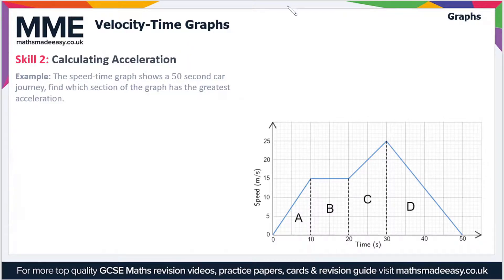The acceleration is found by working out the change in velocity divided by the time. In this graph, that is given by the gradient. So we have to work out which section of the graph has the steepest gradient.